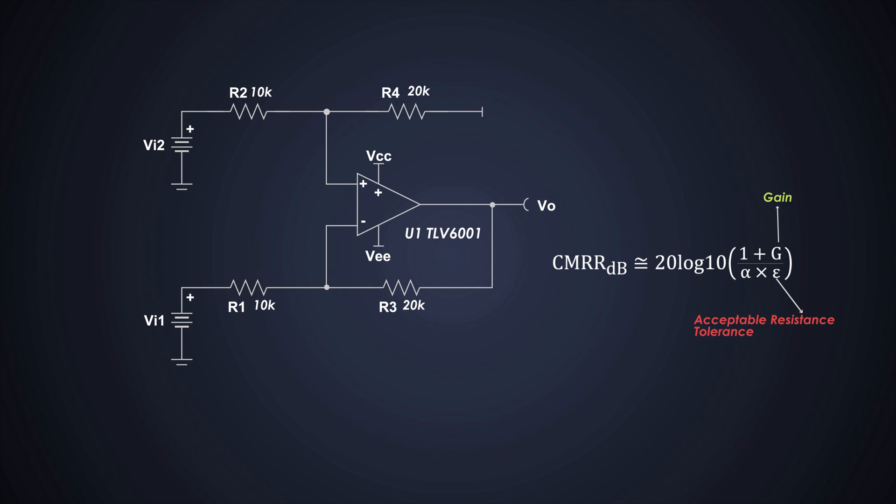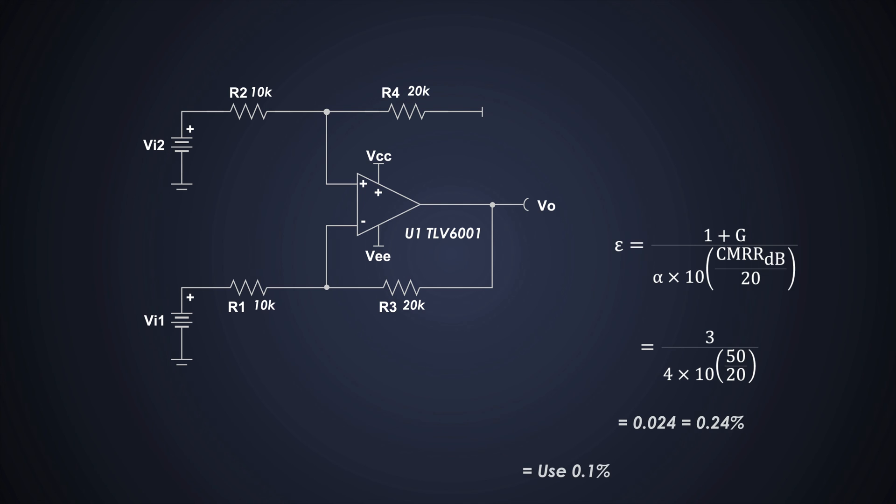G is the gain of the amplifier and alpha for a required CMRR should be 4. Now we can modify this formula to calculate the resistor tolerance. So, the acceptable tolerance can be 0.24%, but for the safer side, we will use 0.1% tolerance resistors.